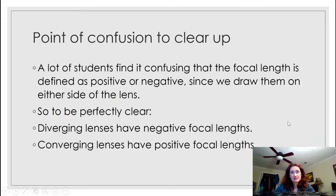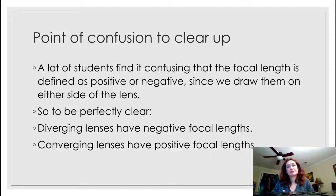A lot of students find it confusing that the focal length is defined as positive or negative because we draw it on either side of the lens. To be perfectly clear: diverging lenses are going to have negative focal lengths, and converging lenses are going to have positive focal lengths.